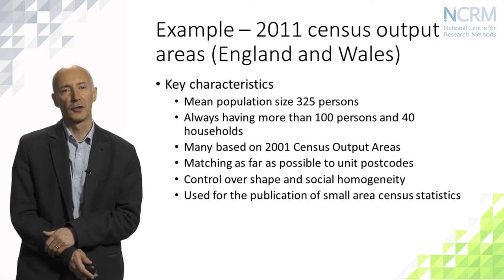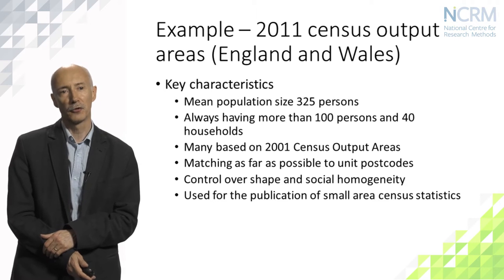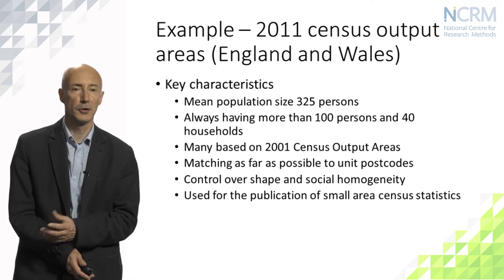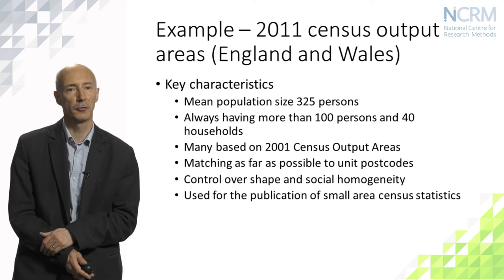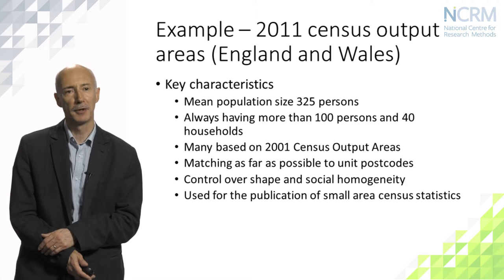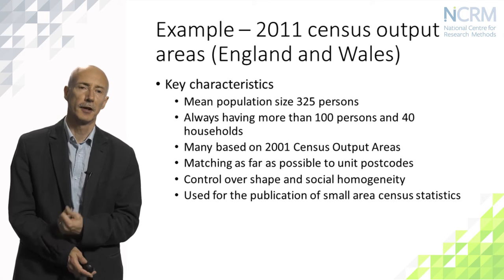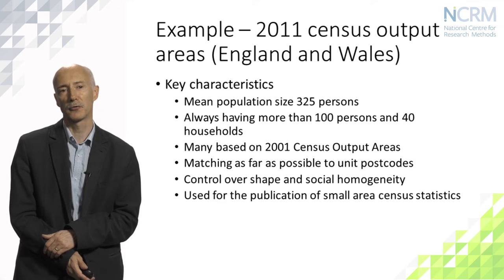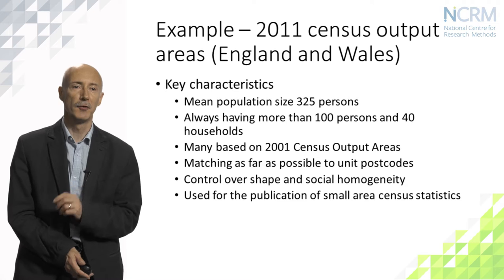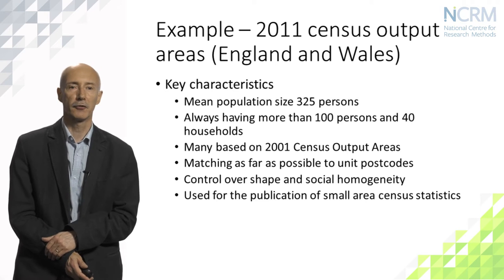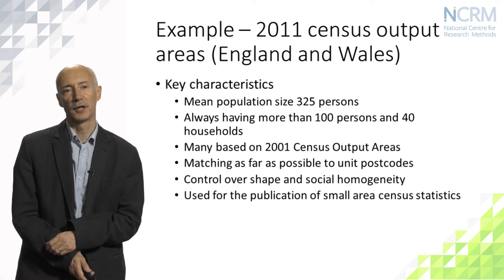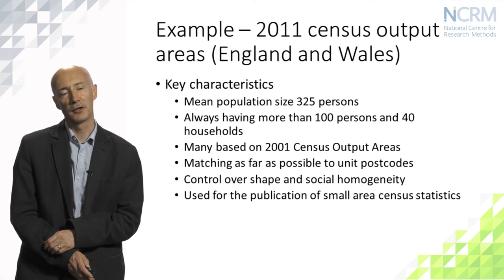There are lots of different constraints and considerations brought to bear on how those zones are placed on the ground. That would have included attempting to match as closely as possible to the unit postcodes, which are the smallest units in the postal geography, attempting to control for the shape of those zones so that they're not too irregular on the map, and trying to observe social homogeneity so that zones keep neighbourhoods with similar social characteristics together. It's important to realise the purpose of the zonation — these zones are used for the publication of small area census statistics, and so the placement of zone boundaries is a result of a set of very explicit design procedures.